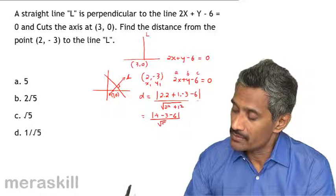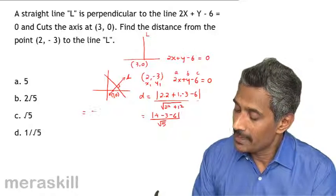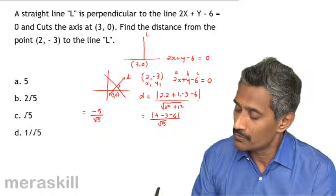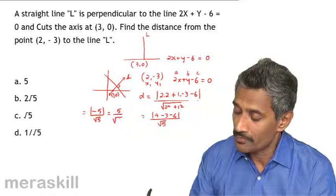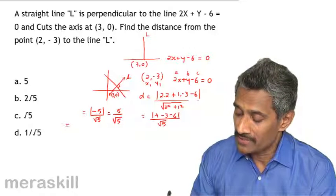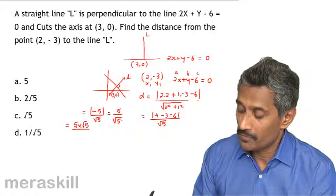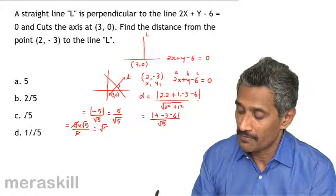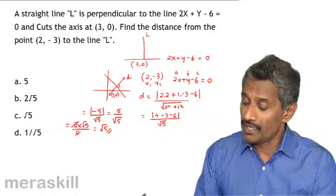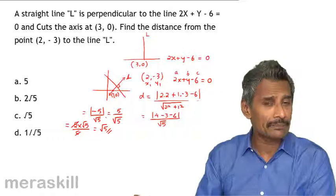This works out to |4 - 3 - 6| over √(4 + 1), which is |-5| over √5, giving us 5 over √5. Rationalizing the denominator by multiplying numerator and denominator by √5: √5 × √5 = 5, which cancels, and we get √5 as the distance.